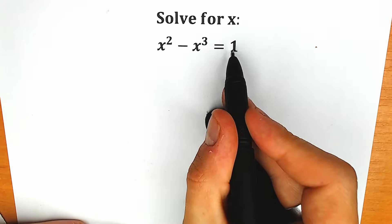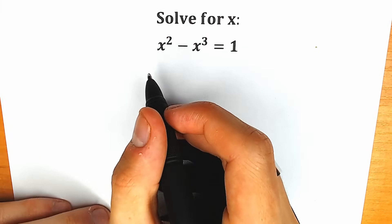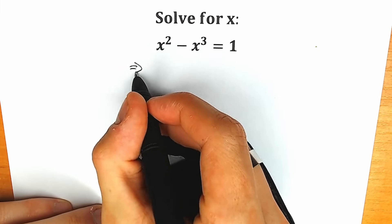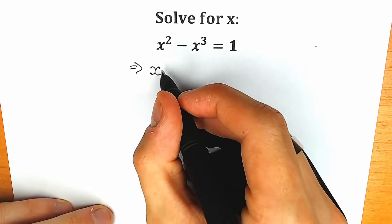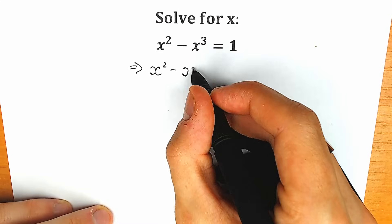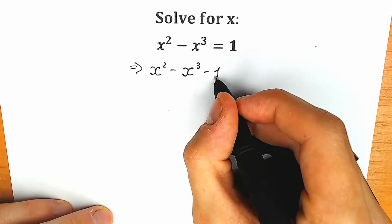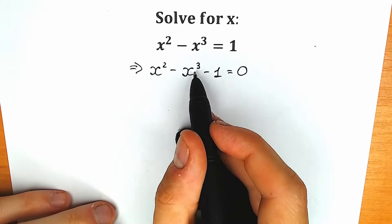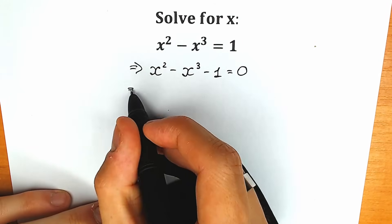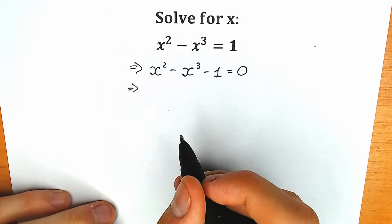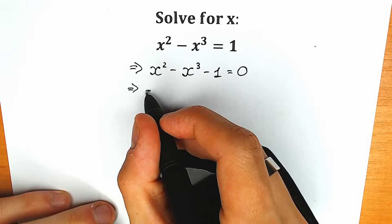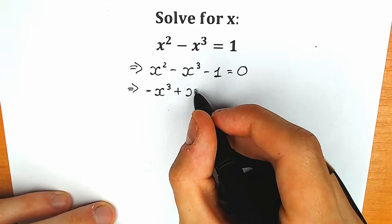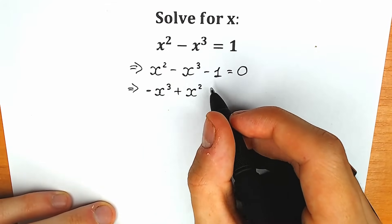So first of all, I'm going to write this on the left side. We have x squared minus x cubed and minus 1 is equal to 0. But we prefer a little bit different order. Let's write the x cubed on the first position. So let's change the order a little bit. As a result, we have minus x cubed plus x squared minus 1 equal to 0.